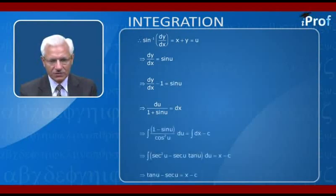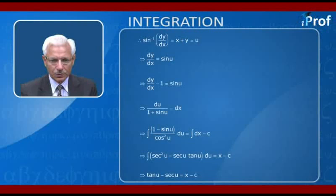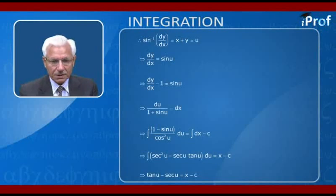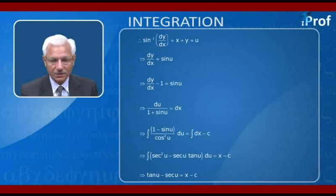This is a variable separable form. Integrating, we get ∫(1 − sin u)/cos²u du = x + c, which becomes ∫(sec²u − sec(u)tan(u)) du = x − c.